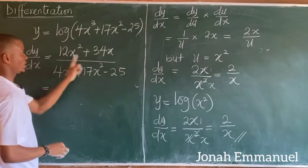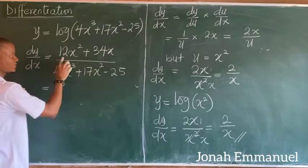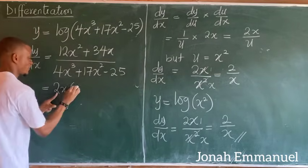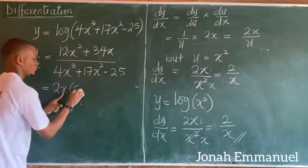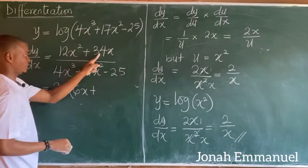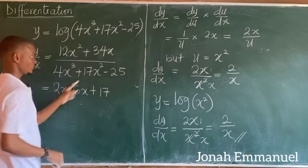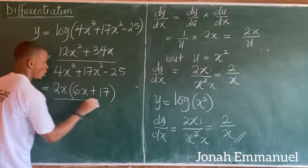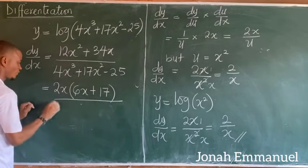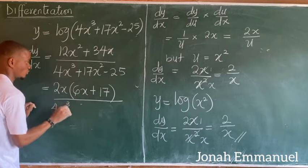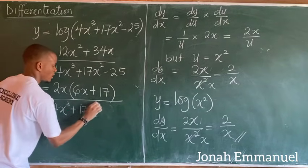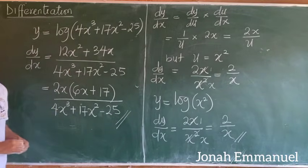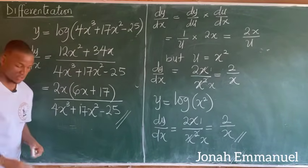If you want, you can factorize the numerator using 2x: 2x(6x + 17), all over 4x³ + 17x² − 25. This is the answer using the logarithmic function shortcut.